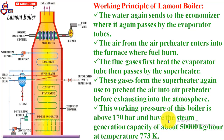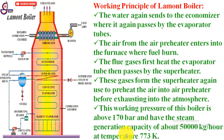The gases from the superheater are again used to preheat the air in the air preheater before exhausting into the atmosphere. The working pressure of this boiler is about 170 bar, with a steam generation capacity of about 50,000 kg per hour at a temperature of 773 Kelvin.